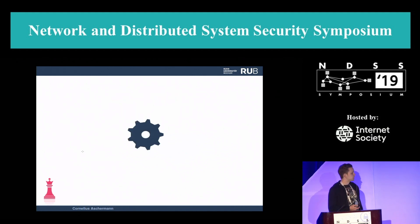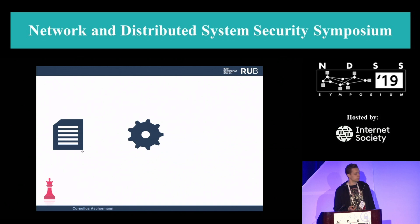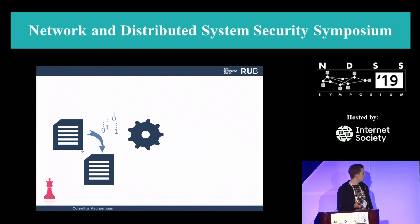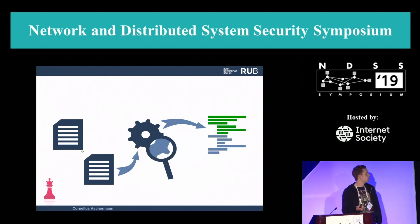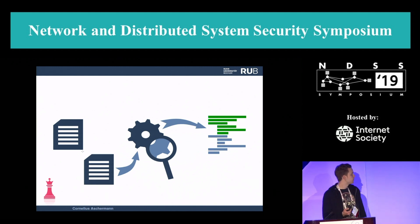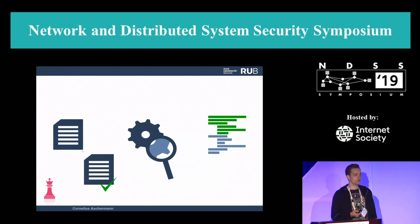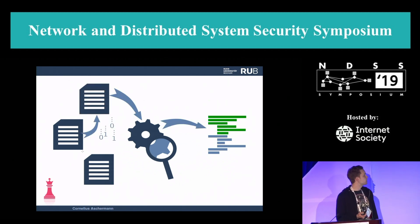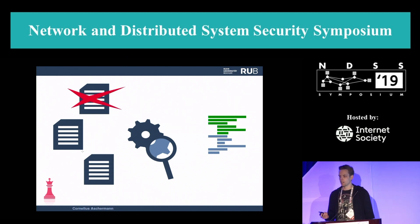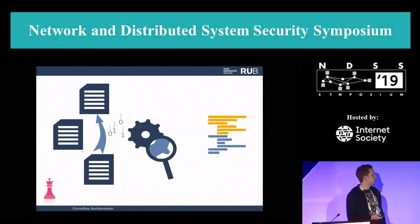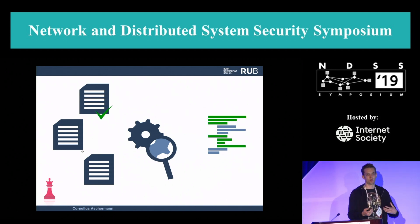AFL is a feedback-driven mutational fuzzer. That means we have a target program and some kind of seed corpus, which might, for example, contain the empty file or something like that. AFL creates a mutation of the seed input, puts it into the program, and observes the coverage that this input triggered. If this coverage contained any new code, we save the input in the queue, and this process is repeated. Inputs that do not trigger new coverage get removed from the queue. Eventually, the fuzzer can thus learn, evolutionarily, what inputs are actually interesting and builds up a corpus of test cases.